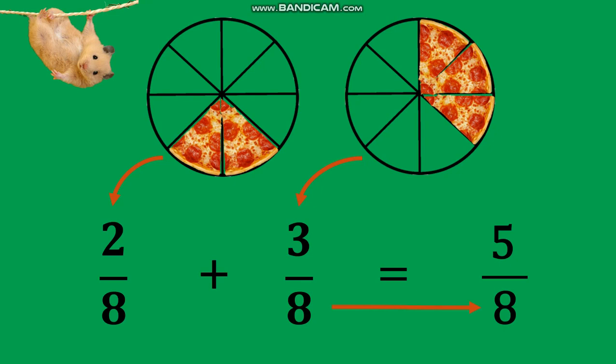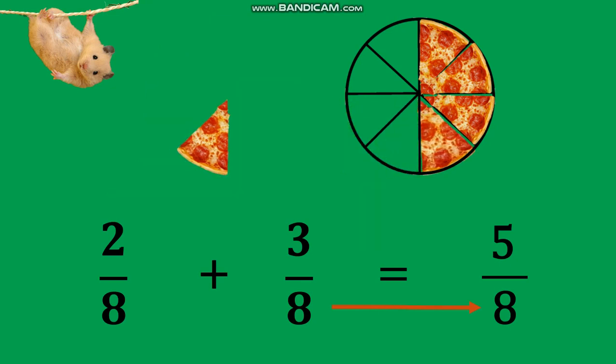Let's now visualize 2 eighths plus 3 eighths by adding the 2 eighths portion of the first pizza to the 3 eighths portion of the second pizza. We now have 5 one-eighth portions of pizza in all, which equals 5 eighths.